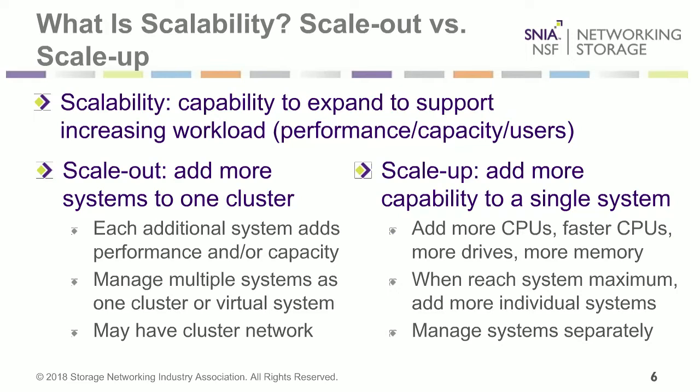When we say scale-out, that usually means you add more systems or more hardware to one cluster. Each additional piece of hardware increases performance, capacity, or both. You can manage these multiple systems together as a single virtual system in one cluster — multiple pieces of hardware connected together, but it looks and is managed like one system. There is always a cluster network, which could be the same as the regular network or a separate network.